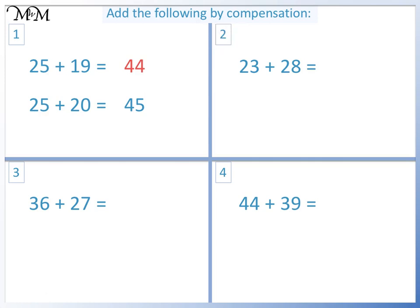Question 2: 23 plus 28. We can add 2 to 28 to make 30. 23 plus 30 equals 53. Because we added 2 at the beginning, we need to subtract 2 from our answer. So 23 plus 28 equals 51.